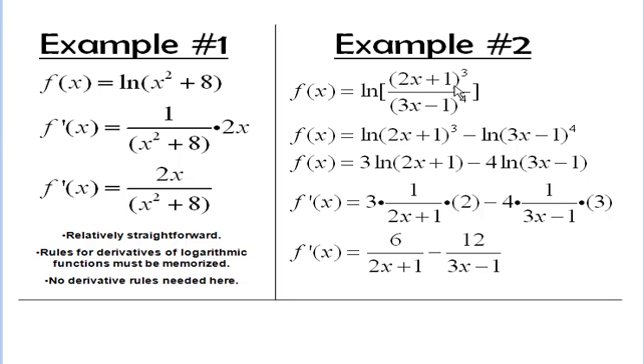Example number 2 is a little more complicated. We have the natural log of a fraction, so we're going to have to use some log rules, or natural log rules. So first, we're going to change this into natural log of 2x plus 1 cubed minus natural log of 3x minus 1 to the 4th, which we can do based on log rules.